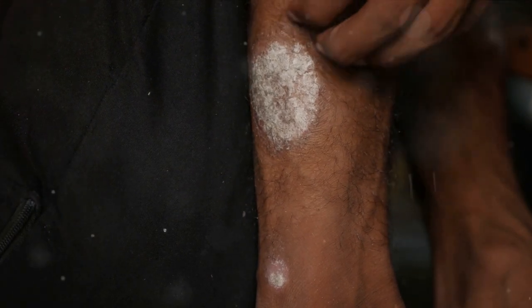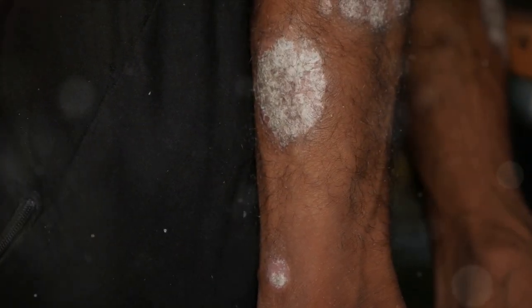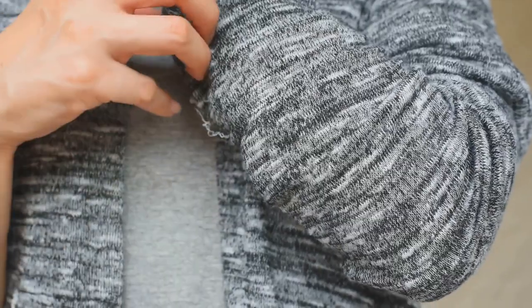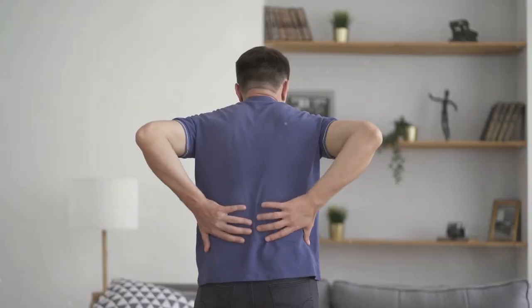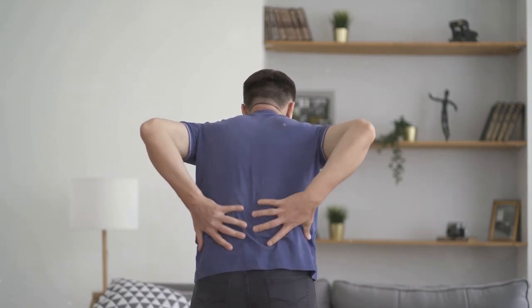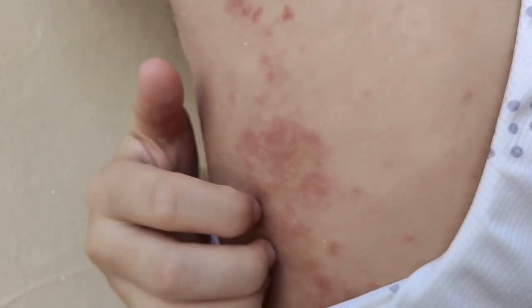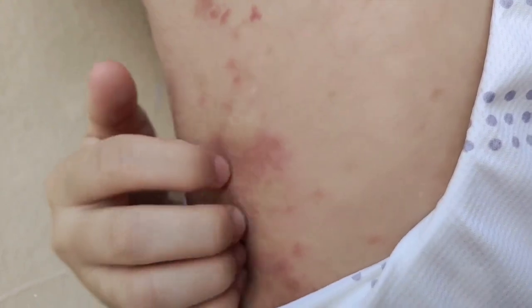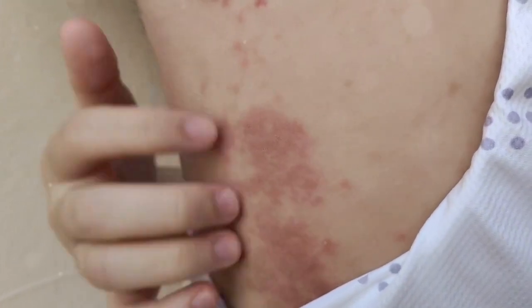So the next time you find yourself scratching a persistent itch or dealing with a persistent rash, it might not just be an allergy or skin sensitivity. It could be a sign that your kidneys are not effectively removing waste from your body. Persistent skin issues could be more than just allergies. It could be your kidneys crying out for help.